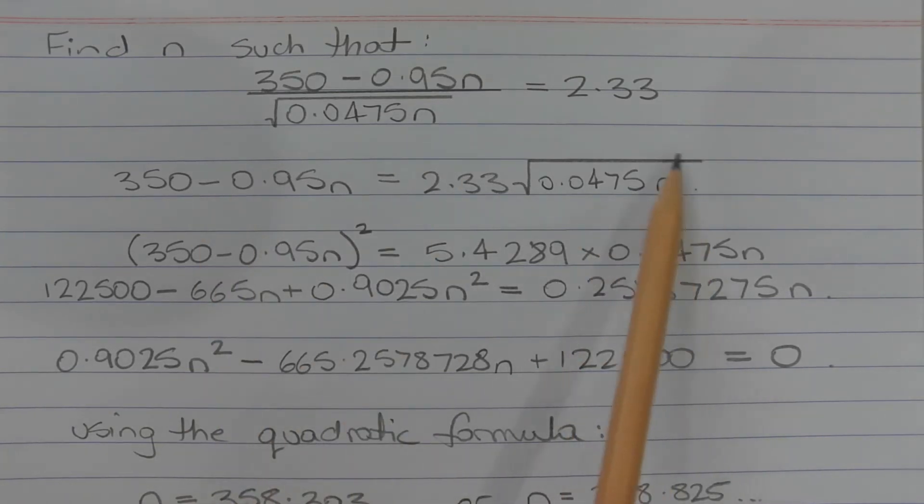Squaring both sides, we get (350 minus 0.95N) squared is equal to 5.4289 times 0.0475N.